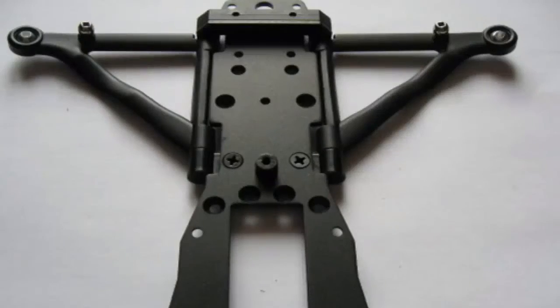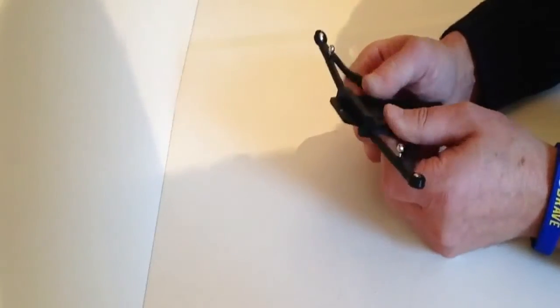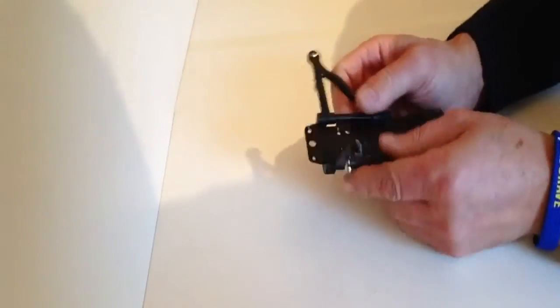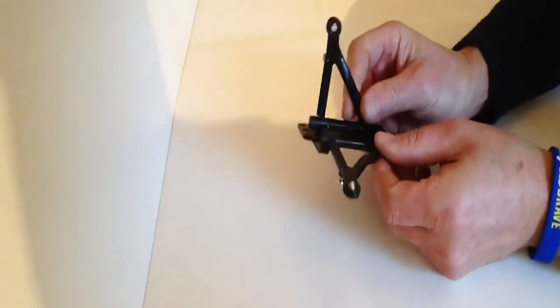Just check that it looks like the one in the photograph, and then check that the two wishbones can move freely around the mount on the shafts like so.